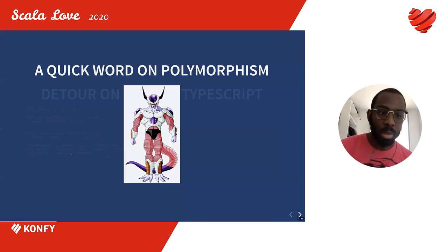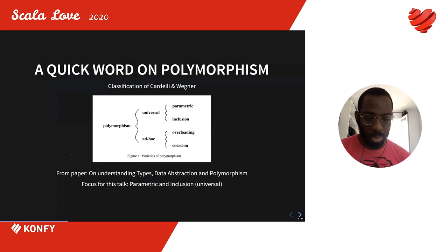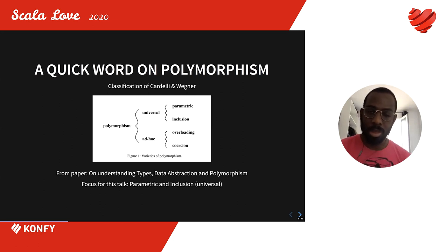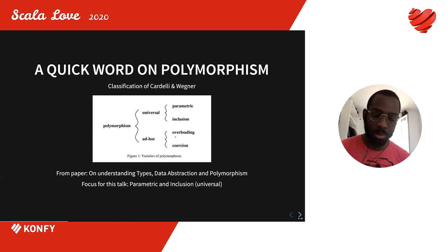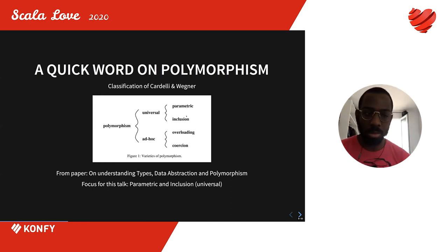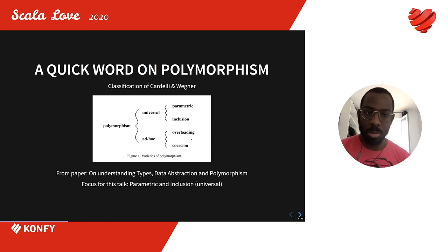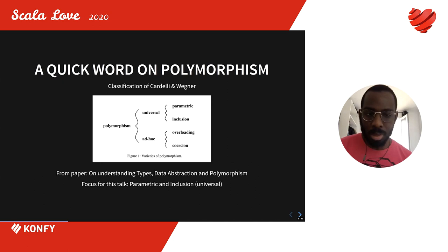Now I want to give a quick recap about polymorphism. In 1985, Cardelli and Wegner gave a classification of the various forms of polymorphism. Their classification includes parametric polymorphism and inclusion polymorphism, which are in the universal group. This talk will focus on those two forms. We won't cover all forms — for example, there's another talk in the conference about type classes.